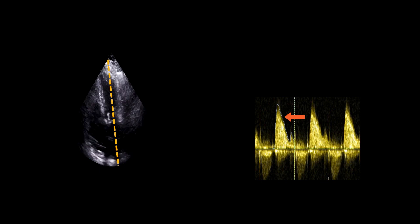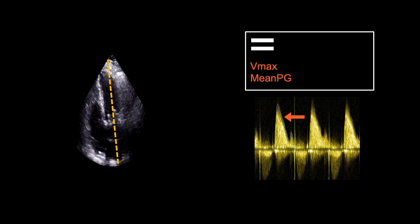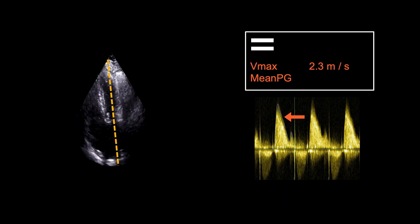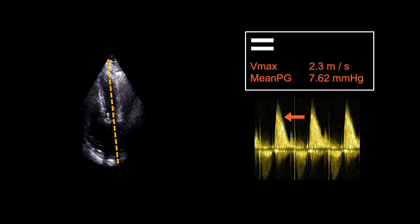Next, trace the Doppler profile to determine the peak velocity and mean pressure gradient. Here, the peak velocity is 2.3 m per second and the mean pressure gradient is 7.62 mmHg.